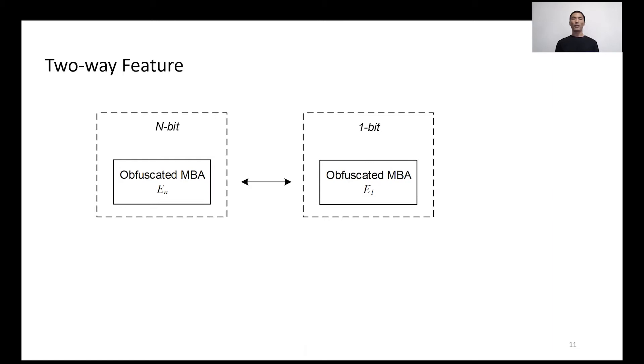First, we present an exciting finding: existing MBA obfuscation design actually implies a two-way transformation feature between one-bit and n-bit variables. It means that if an MBA expression exists in an integer space, then it must also hold in one-bit space and vice versa. This two-way feature implies that any n-bit sophisticated MBA expression can be simplified in one-bit space.